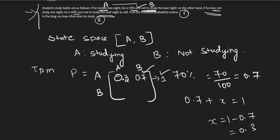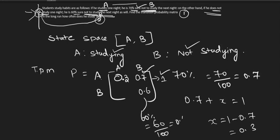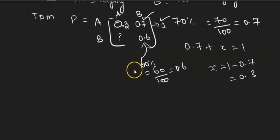On the other hand, if he does not study — does not study means B — he is 60% sure not to study. This is the transition from not studying to not studying, so B to B. B to B is 60%, which is 60 divided by 100 equals 0.6. And since each row total must be 1, B to A is 1 minus 0.6 equals 0.4.